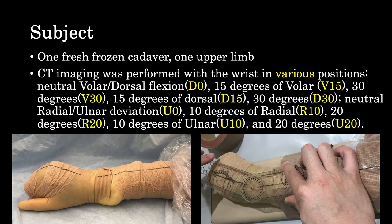The subject was one fresh frozen cadaver upper limb. CT imaging was performed with the wrist in various positions: neutral, volar 15 degrees, 30 degrees, dorsal 50 degrees, and 30 degrees. Ulnar and radial deviation included neutral, 10 degrees of radial deviation, 20 degrees, and 20 degrees of ulnar deviation.